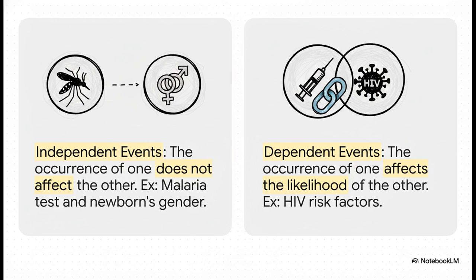But then, on the other side, you have dependent events. And this is where things get really interesting in medicine. This is when one event does change the likelihood of another. Think about it. Things like smoking and lung cancer or family history and heart disease. Those events are deeply connected.